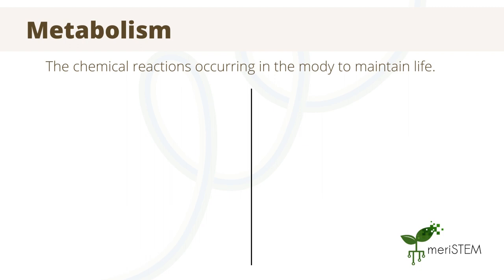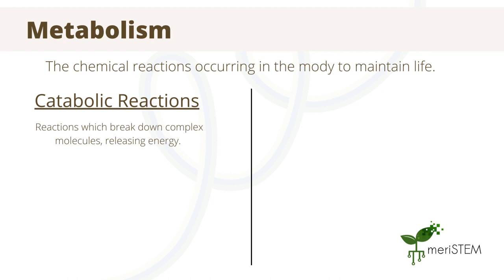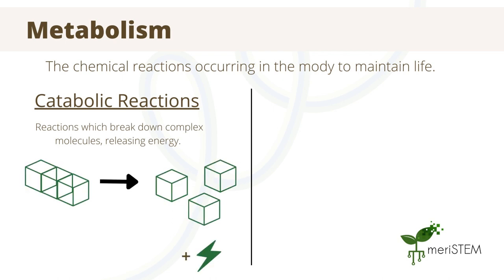There are two types of metabolic reactions that occur within our bodies. The first are known as catabolic reactions, which are reactions that break down complex molecules, releasing energy in the process. This would be a reaction such as the breakdown of glucose in the food you eat to create carbon dioxide and water during cellular respiration.